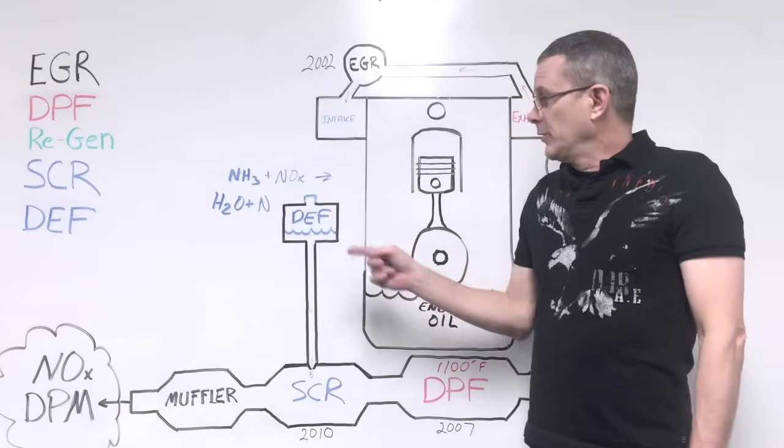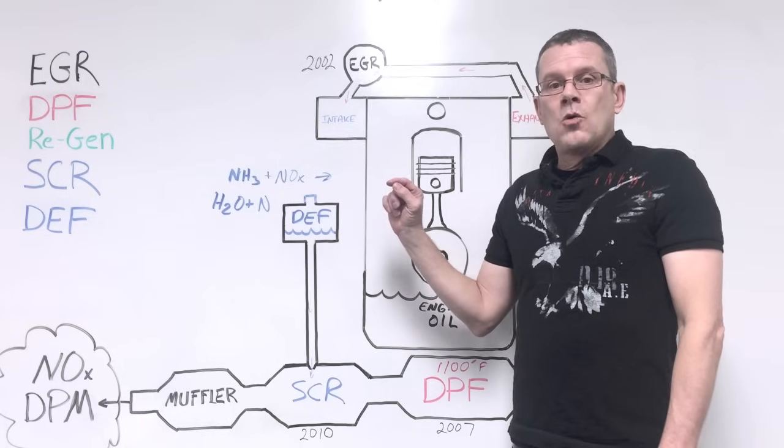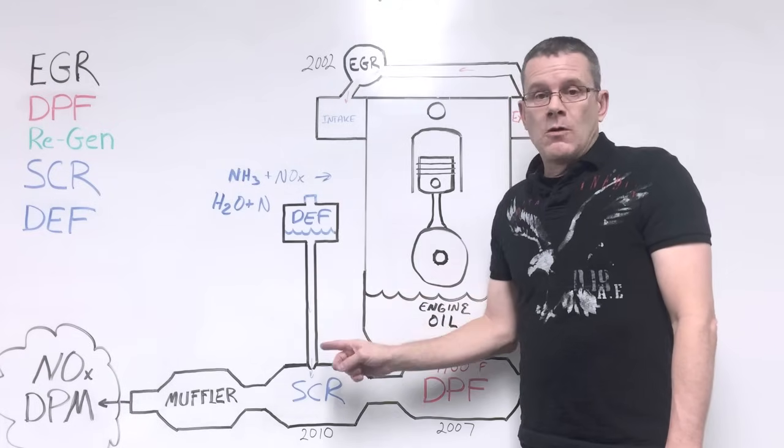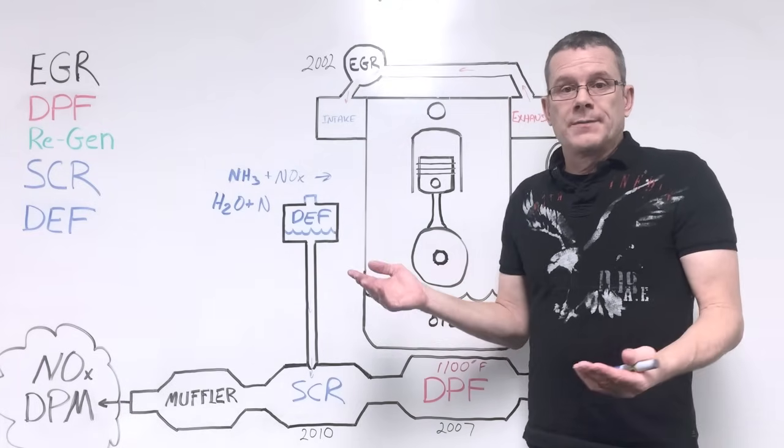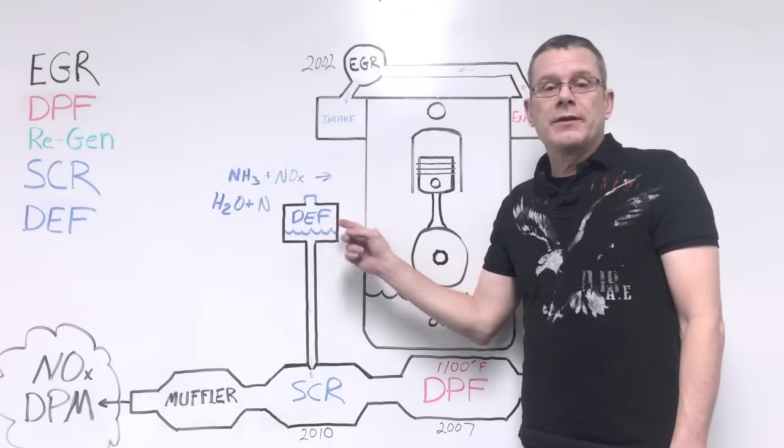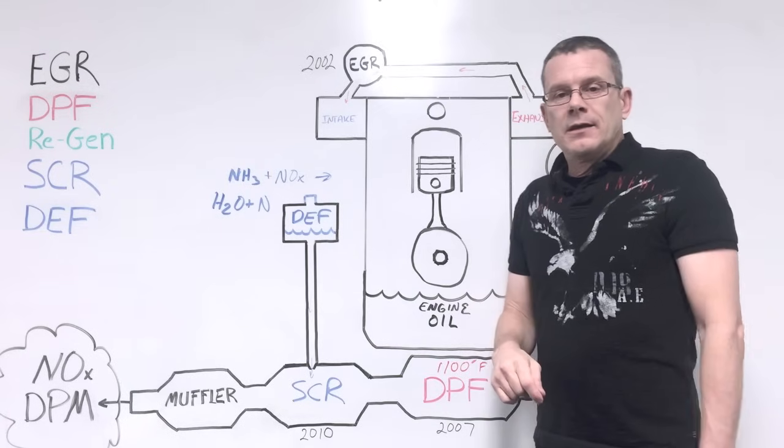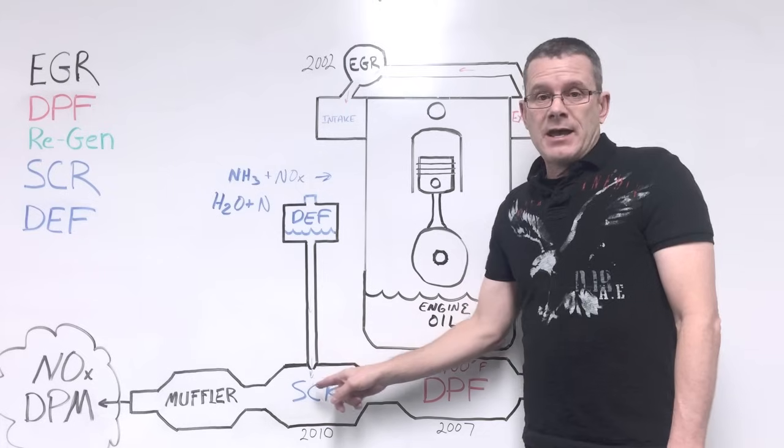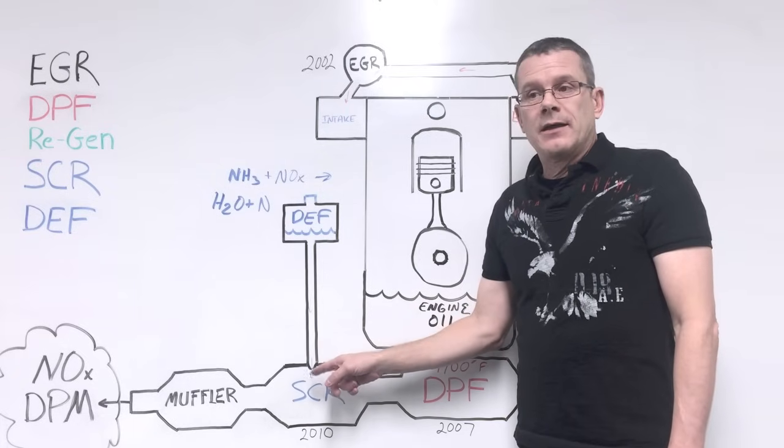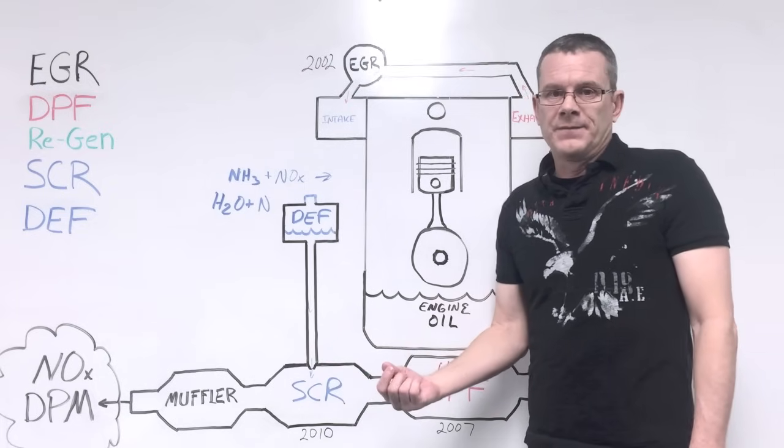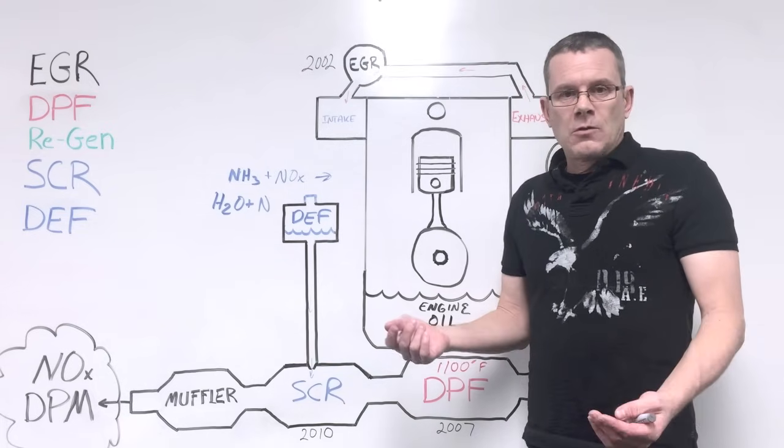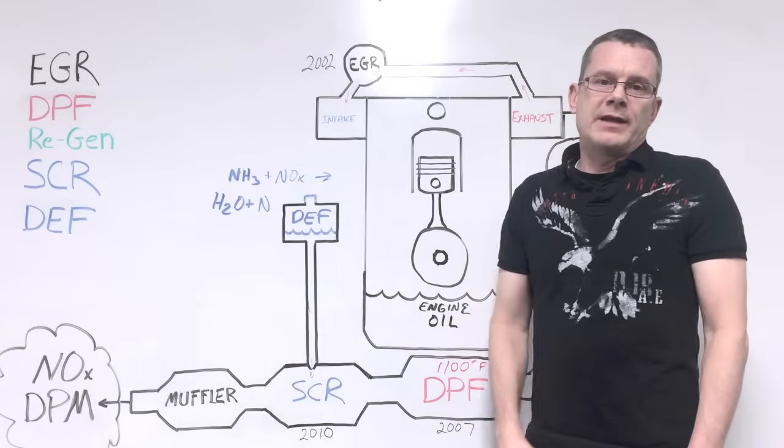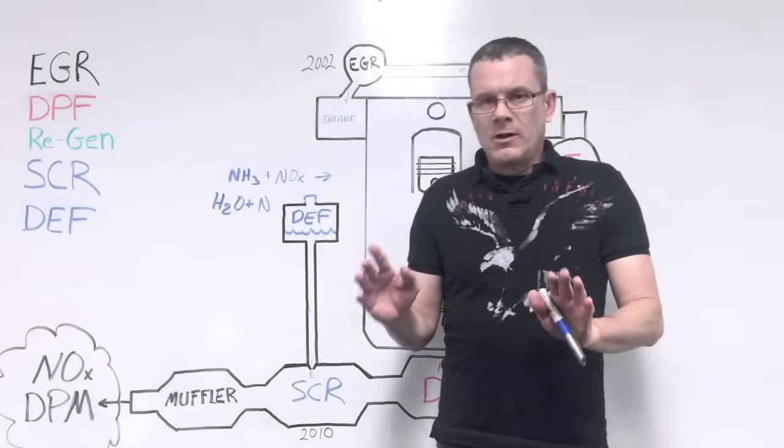Another issue we're finding with that fluid is it can be contaminated, or if it sits for a couple of months, it can crystallize, and then it won't be able to be injected, and the truck won't start. Also, in really cold weather, that DEF fluid is crystallizing and plugging the injector in the SCR itself. So, in the middle of winter, the truck won't run or it's in limp mode, and the DEF is up and you're wondering what's going on.